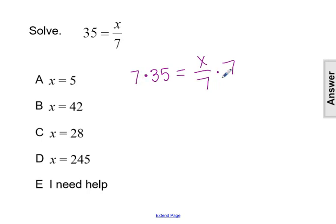Well, multiplying by 7 on the left, 7 times 35 gives us 245. And multiplying by 7 on the right side of the equation undoes that dividing by 7 and leaves us with our variable x isolated.